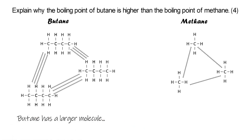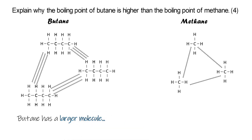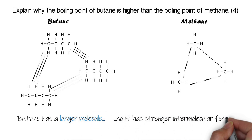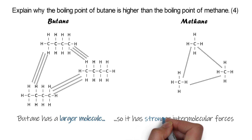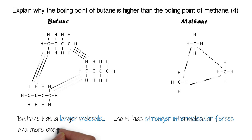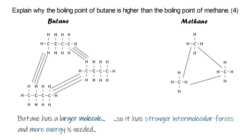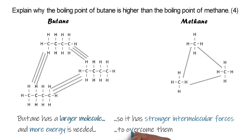Butane's molecules are larger — that's the important part — because that means its intermolecular forces are stronger. That's why we've drawn three lines instead of two. Stronger intermolecular forces means we're going to have to put in more energy. We always have to put in energy when boiling something in order to overcome those forces. We put in enough energy by heating it up so that those intermolecular forces are broken and then the compound can be boiled.